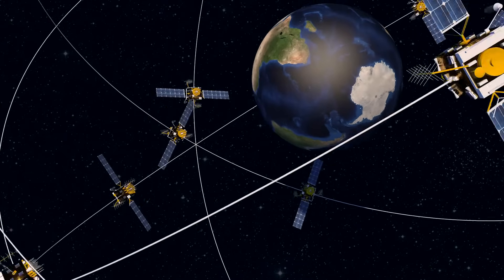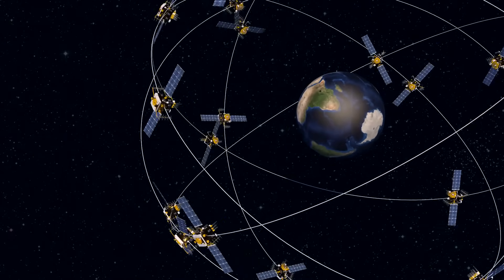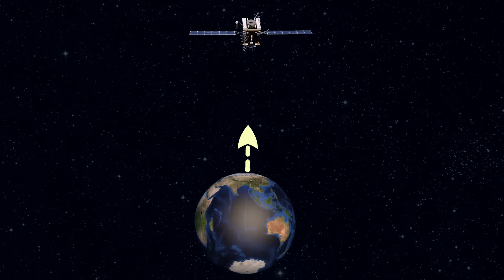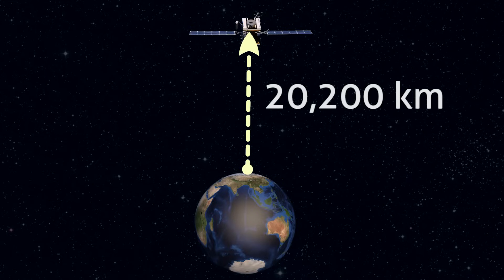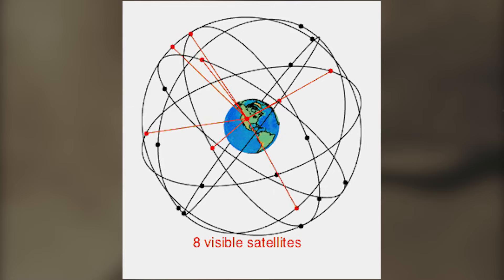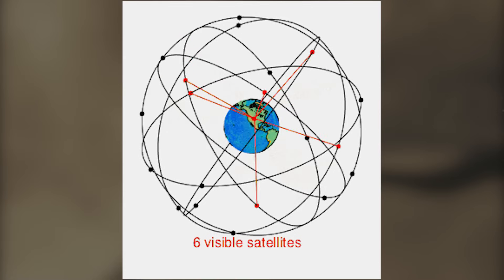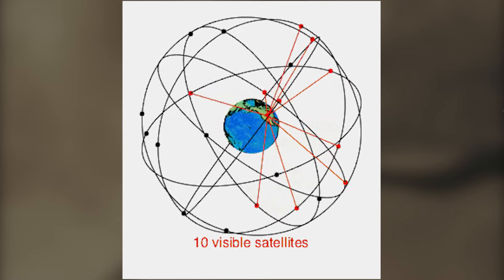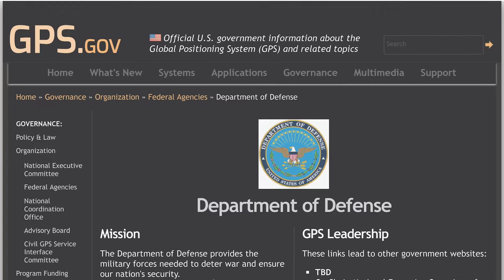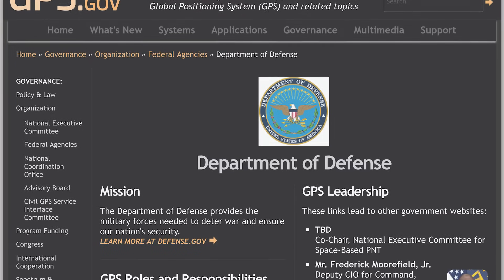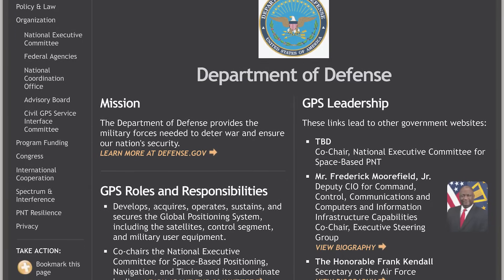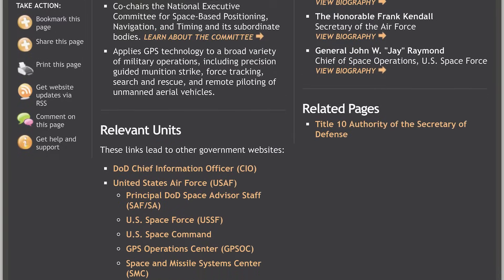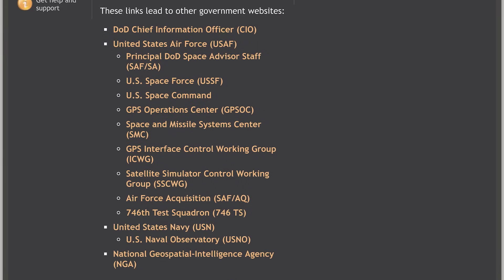Global Positioning System, or GPS, is a constellation of currently 31 satellites orbiting at an altitude of 20,200 km above Earth. The orbits are arranged in such a way that at least 6 satellites are always within line of sight from anywhere on Earth's surface. These satellites are launched and managed by the US Department of Defense, but the data from these satellites can be used freely by anybody anywhere on Earth, with some regulations.